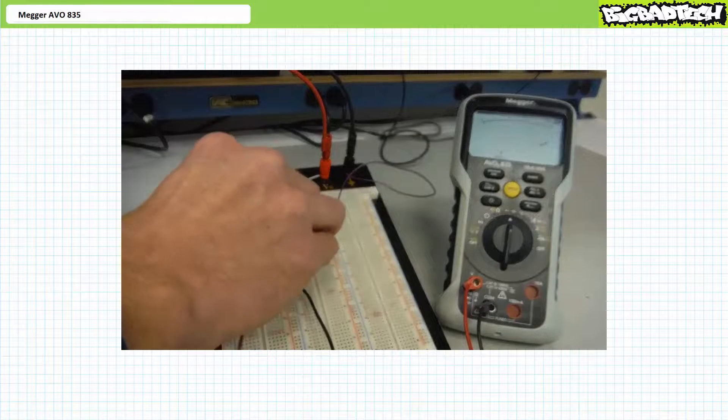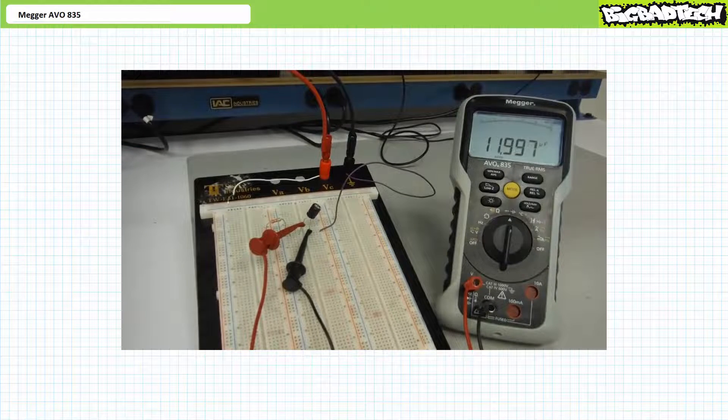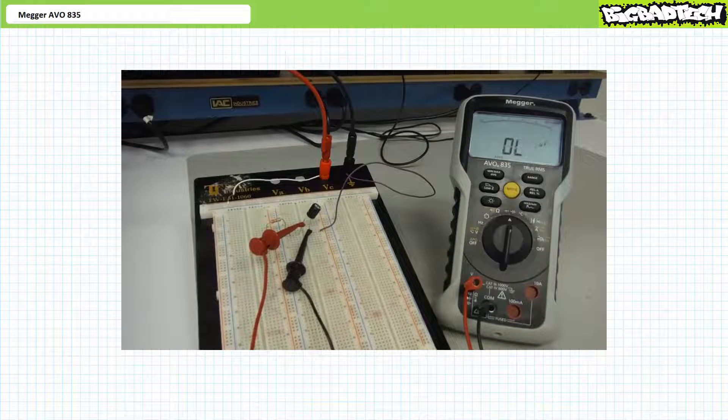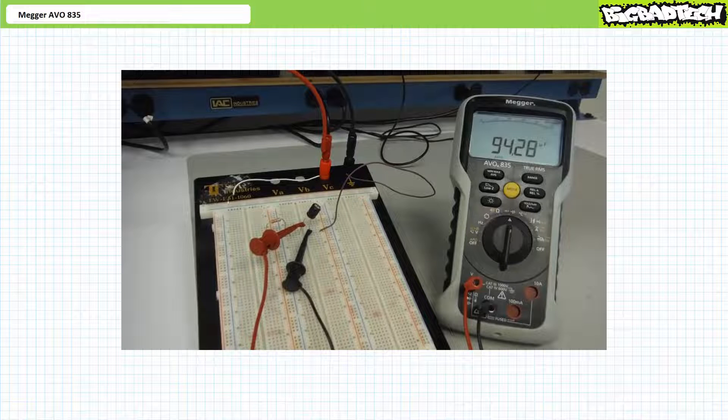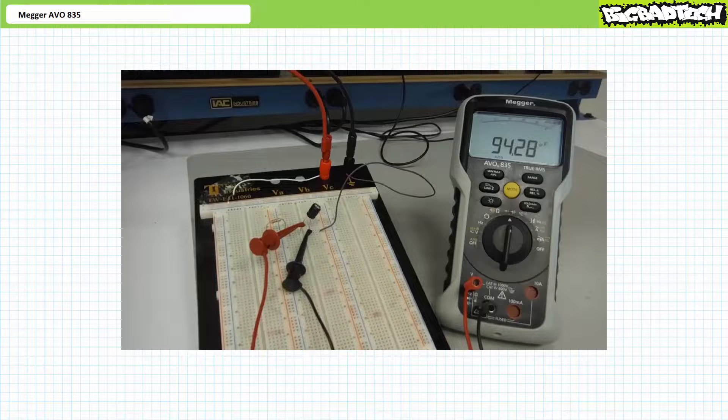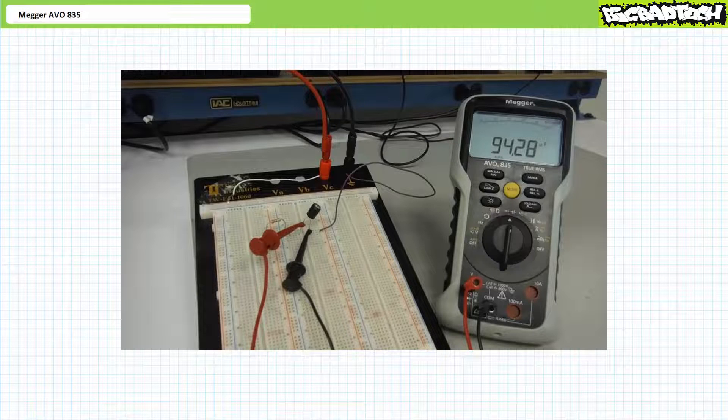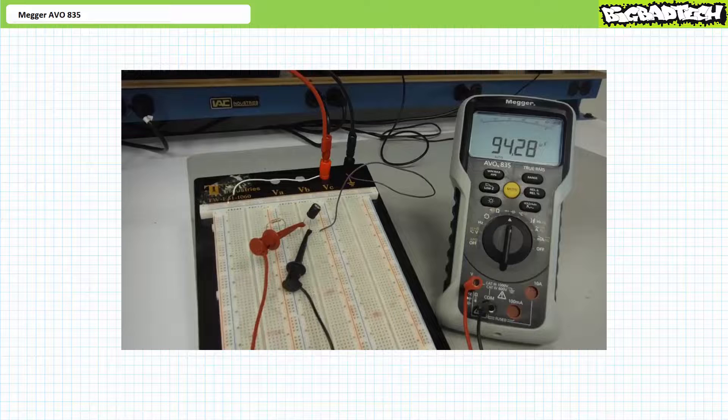When I attempt to measure capacitance, the AV0835 emits an audible pulse beep and flashes voltage over limit on the display. This warning prevents an operator from damage to the instrument, the circuit, or themselves in the case of an error-energized circuit. After a time, the capacitor is safely discharged and the capacitance can be measured properly.